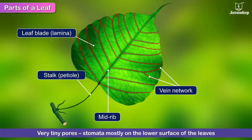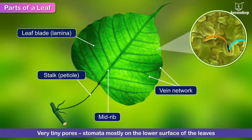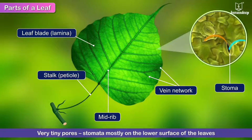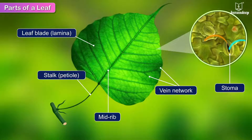There are also very tiny pores called stomata (singular: stoma), mostly on the lower surface of leaves. Leaves breathe in and breathe out air through the stomata.